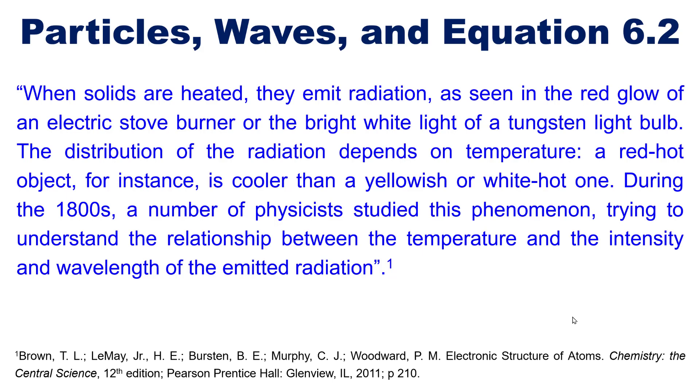The distribution of that radiation depends on temperature. A red hot object for instance is cooler than a yellowish or white hot one. During the 1800s a number of physicists studied the phenomenon trying to understand the relationship between the temperature and the intensity of the wavelength of the emitted radiation.